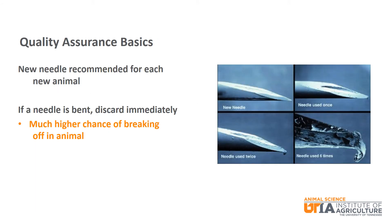For pork quality assurance basics: a new needle is recommended for each new animal. If a needle is bent, it should be discarded immediately — never straighten it and use it again, as this is extremely dangerous and it could break off in the animal. A microscopic view of needles shows how the tip curls after multiple uses. You would not want to be injected with a used needle, and neither would your pigs.